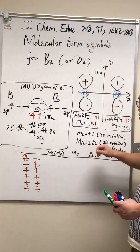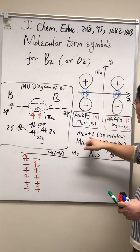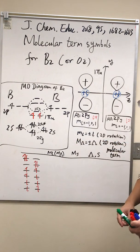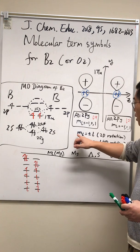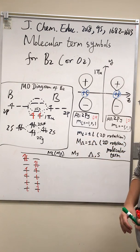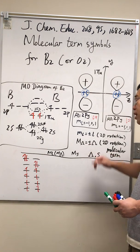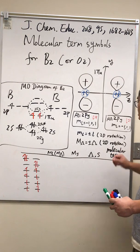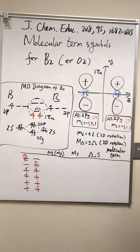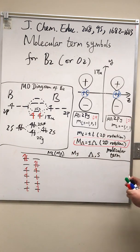Similarly, we have this equation, except we use lowercase l, lowercase m sub L for single electrons. We use uppercase L and uppercase M sub L for a group of electrons in an atom. We use Greek letters, such as lambda, for molecular term symbols. And this equation is very important.